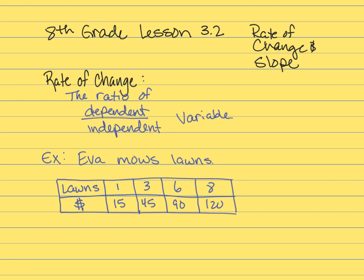Here's an example. We've got Ava mowing lawns. She mows lawns, she makes money. She can't make money without mowing lawns, right? So the independent variable that's relied upon is the fact that she goes and mows the lawns. The dependent variable, how much money she makes, depends on how many lawns she mows.